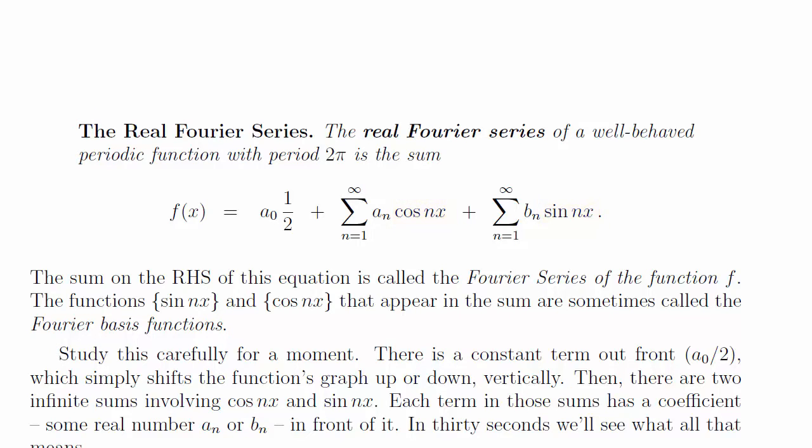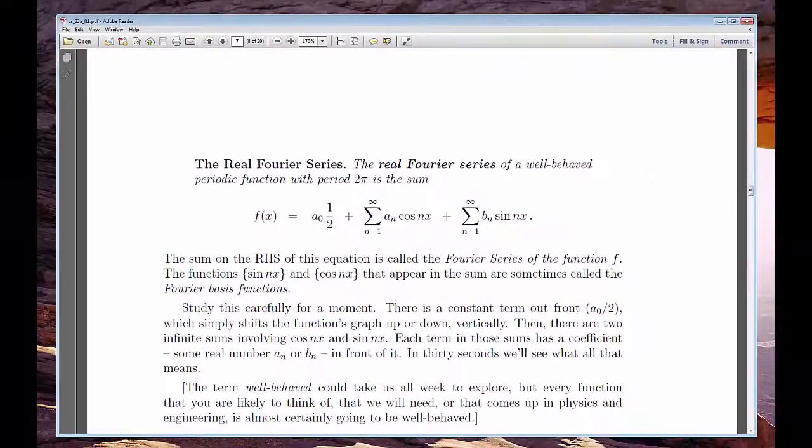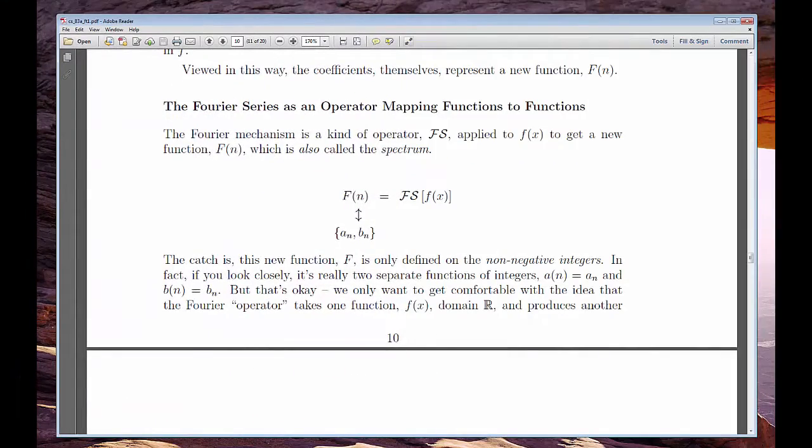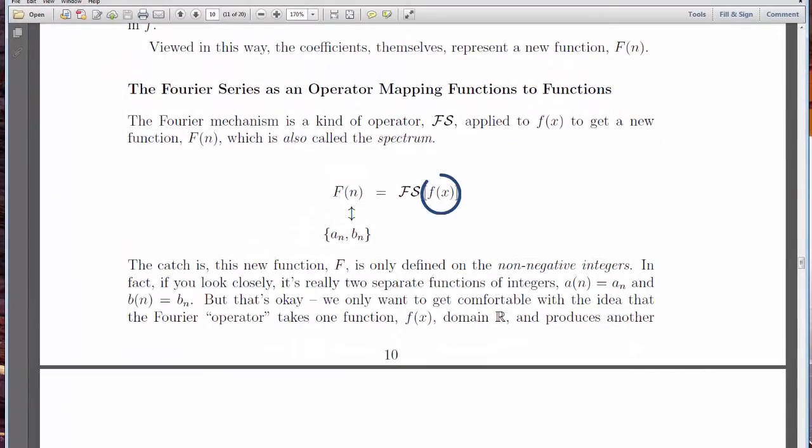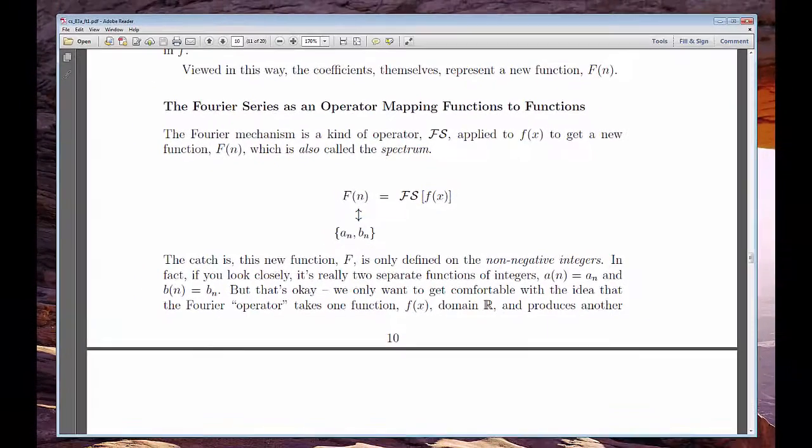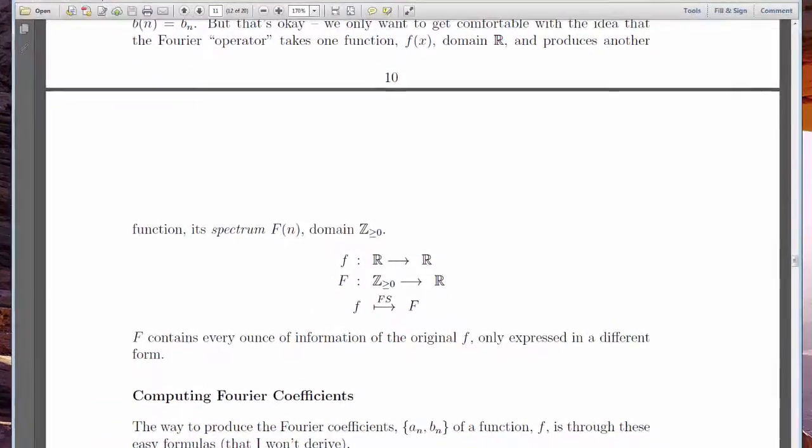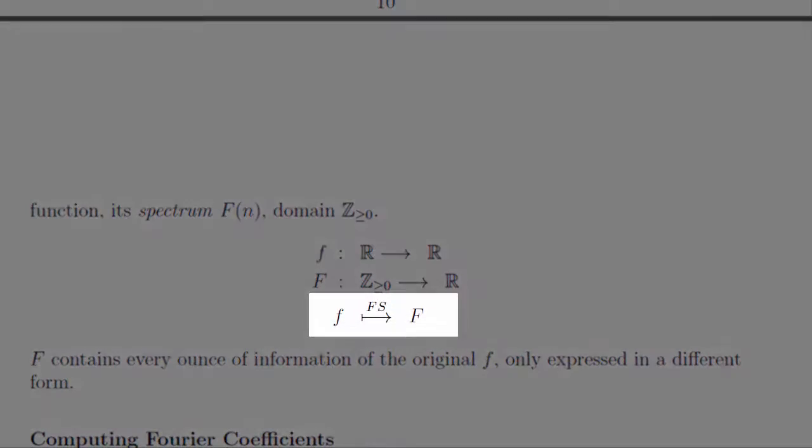This all defines a mapping from continuous functions defined on some compact interval, functions like f of x equals x, e to the x, or x cubed minus log x, to discrete sequences a sub n and b sub n. Again, we have a mapping from continuous functions to discrete sequences.